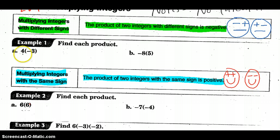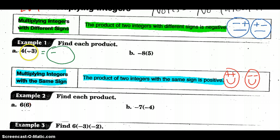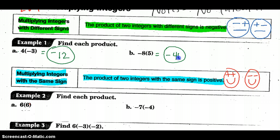Let's work this problem. We have different signs, so I already know my answer should be negative. I'll go ahead and circle a negative because I have a positive and a negative. Then I just take care of 4 times 3, which is 12. Opposite signs — 8 times 5 is 40 — so it's negative 40 and negative 12.